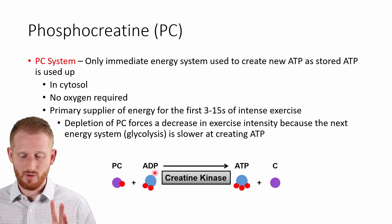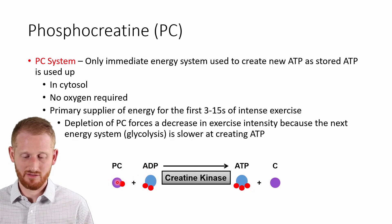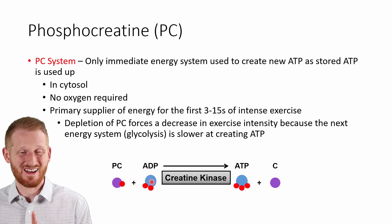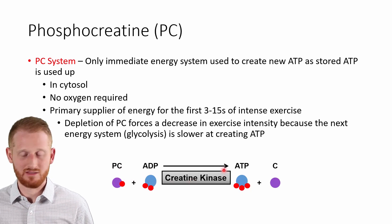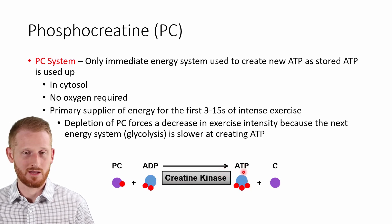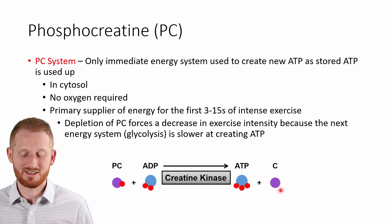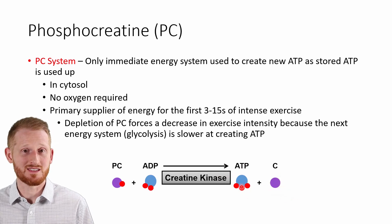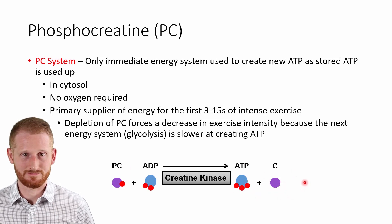Looking briefly at the chemical reaction: we have a phosphocreatine molecule and an adenosine diphosphate molecule. We take a phosphate off the phosphocreatine and add it to the ADP, making an ATP — and to do that we need the enzyme creatine kinase. The products are ATP and a creatine molecule without its phosphate, because that phosphate has been moved over to make the ATP. This is the simple diagram of the phosphocreatine system.